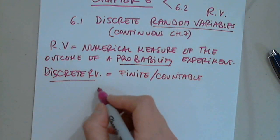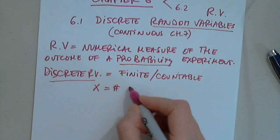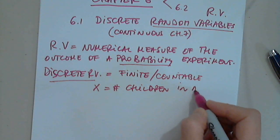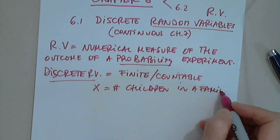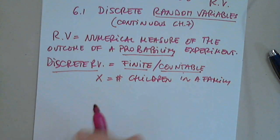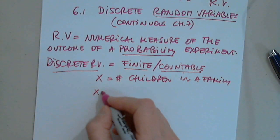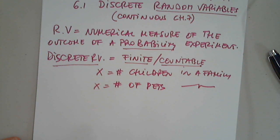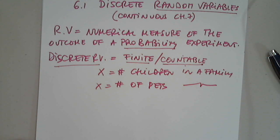A discrete random variable would be x number of children in a family. It's finite and it's countable. Another example, number of pets in a family that a family can have, and so on and so forth.